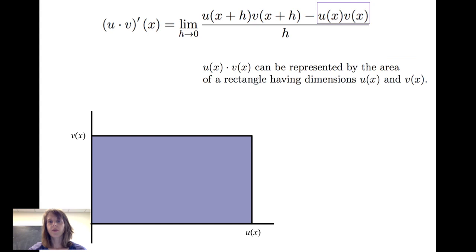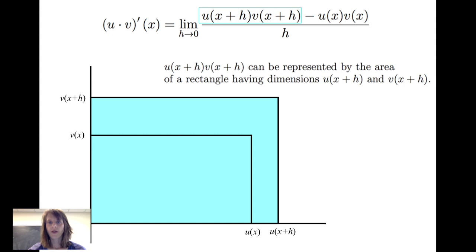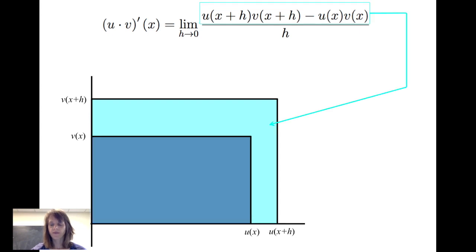First of all, let's take a look at the numerator. That u of x times v of x we can consider and represent as the area of a rectangle having dimensions u of x by v of x. The other piece in the numerator, u of x plus h times v of x plus h, can be represented by the area of a rectangle having dimensions u of x plus h and v of x plus h. So when I find the difference, I'm really looking at this light blue region that's shaded here in this diagram.